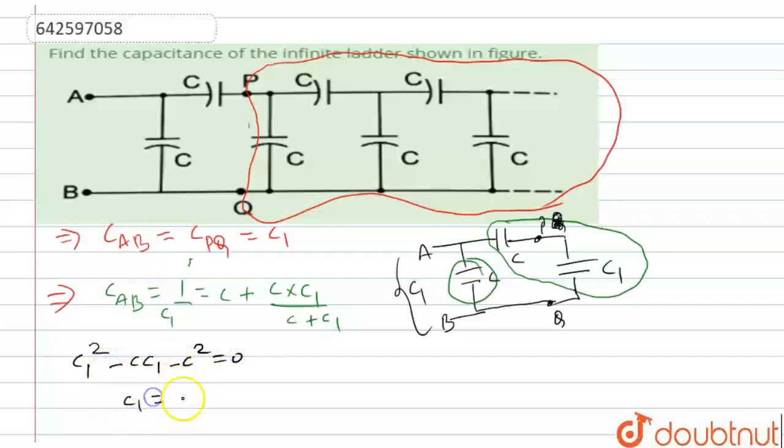C1 equals C plus minus, then C squared plus 4C squared upon 2. I'm neglecting minus sign because capacitance cannot be negative. So from here we can see that C1 equals 1 plus root 5 by 2 times C.